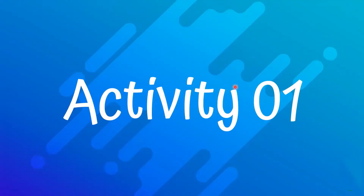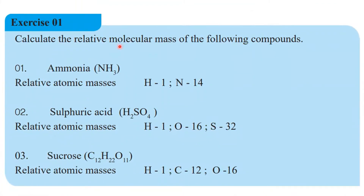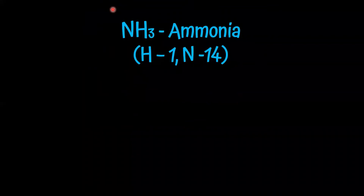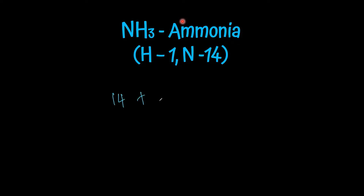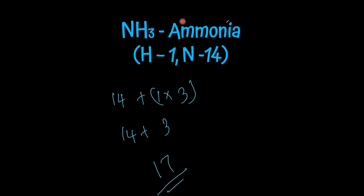Let's discuss Activity 1 from your textbook: calculate the relative molecular masses of the following compounds. The first problem is ammonia, NH3. Nitrogen has a relative atomic mass of 14, and there are 3 hydrogen atoms: 14 + (1×3) = 17. So the relative molecular mass of ammonia is 17.